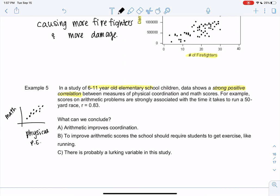So in this example, they did arithmetic problems for math. And they did how long it took to take a 50-yard race. And they got an R of 0.83. So does that mean arithmetic is making the kids more coordinated? No. This is an example of cause and effect. They're not causing each other. Does that mean if I want my kid to do better in math, should the school require them to get exercise like running, so more running makes them better at math? No. That's another example of cause. I think there's a lurking variable. Anybody know what it is?